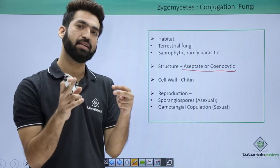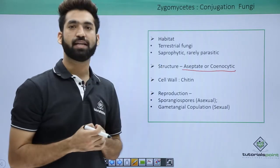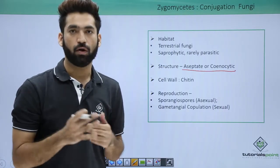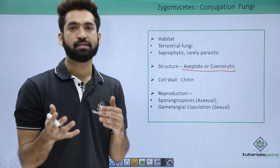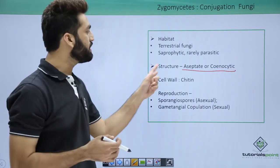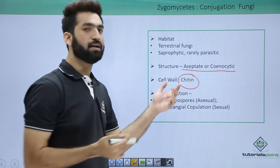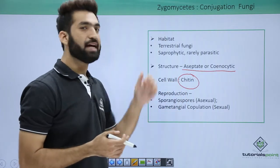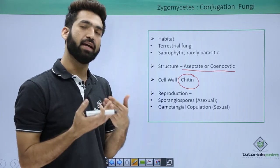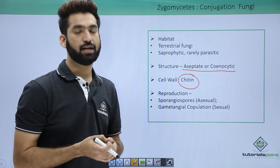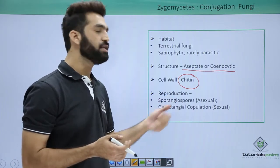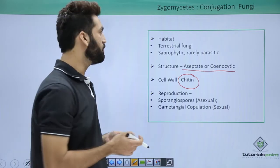One very important difference between zygomycetes and oomycetes members is the cell wall. The cell wall is made up of cellulose in oomycetes, but in zygomycetes the cell wall is made up of chitin. Both are members of phycomycetes, but oomycetes have cellulose cell walls while zygomycetes have chitin — chitin is also called fungal cellulose.